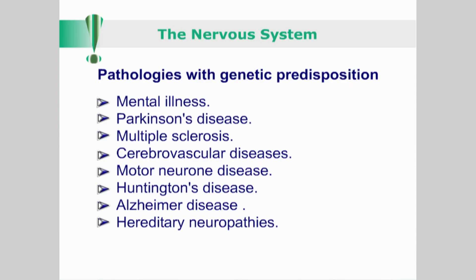Inquiring about family history is of particular importance when evaluating neurological presentations, as there is evidence of genetic predisposition to conditions such as mental illness, Parkinson's disease, multiple sclerosis, cerebrovascular disease, motor neuron disease, Huntington's disease, Alzheimer's disease, hereditary neuropathies, and many others.